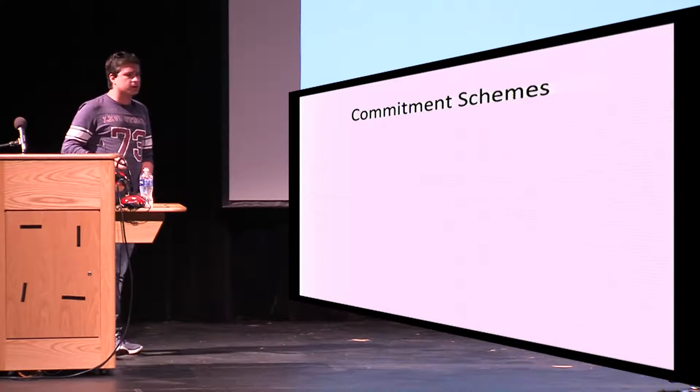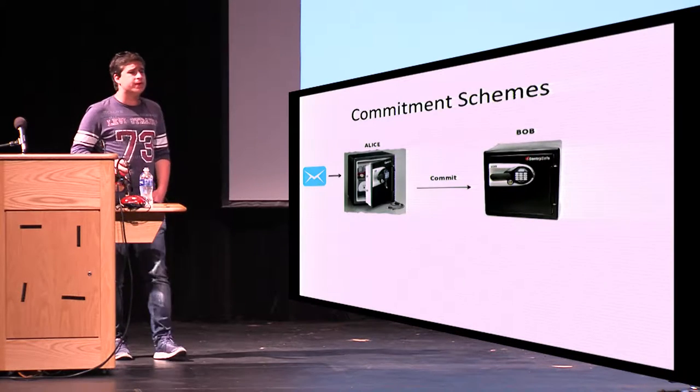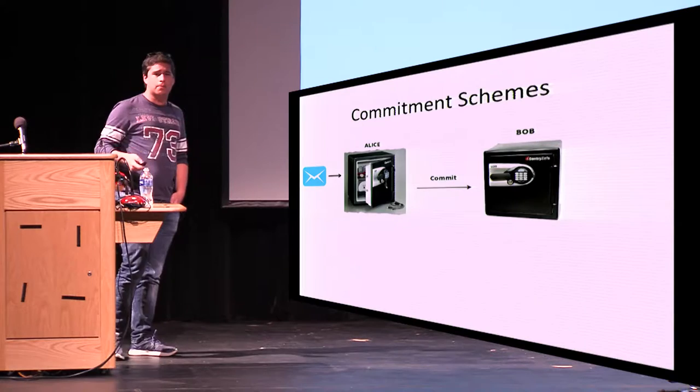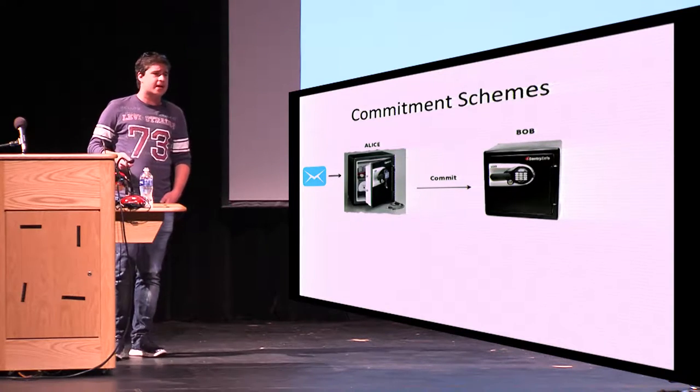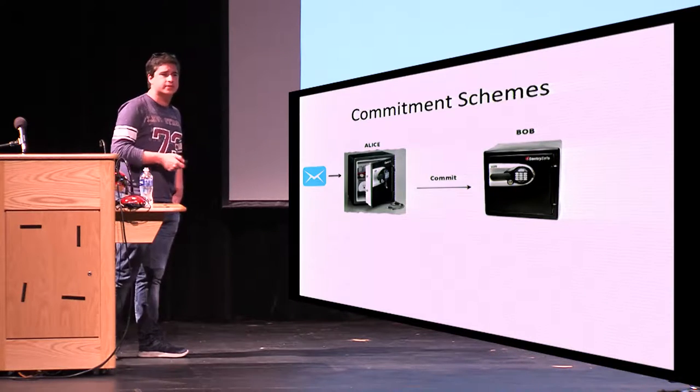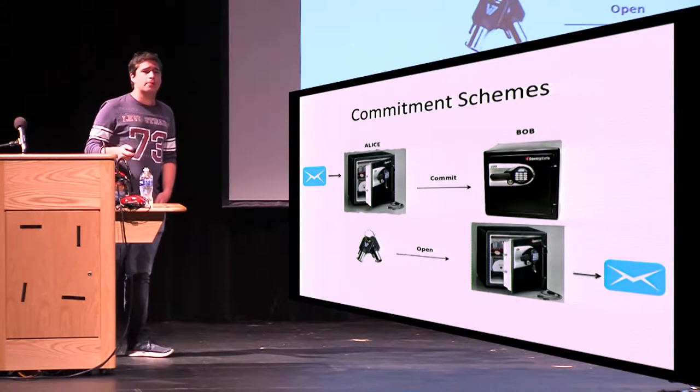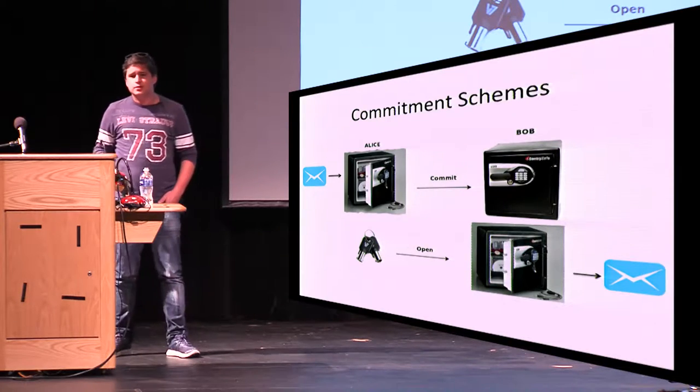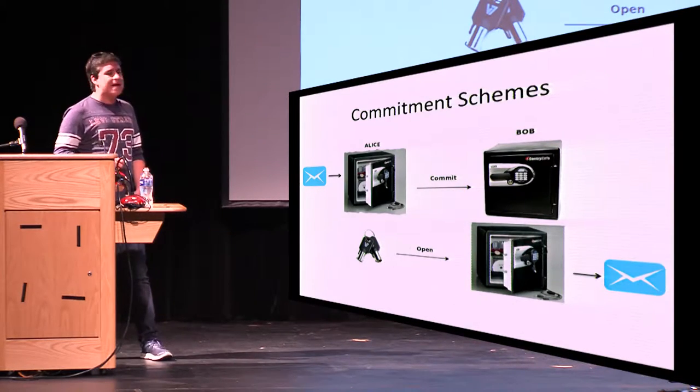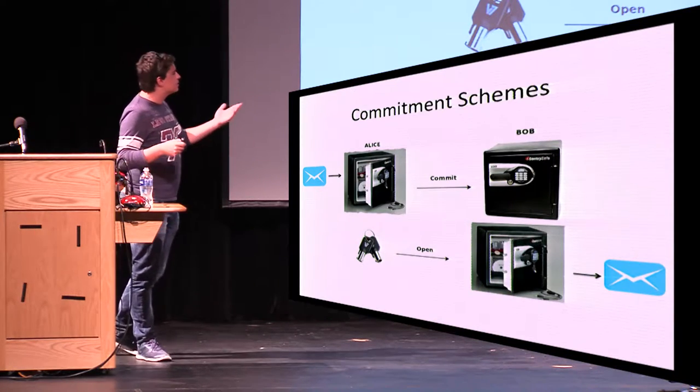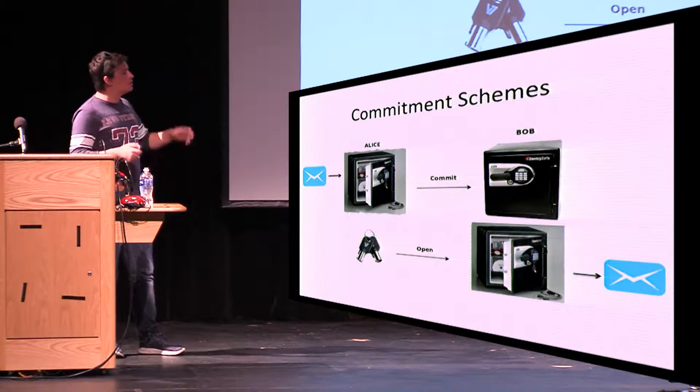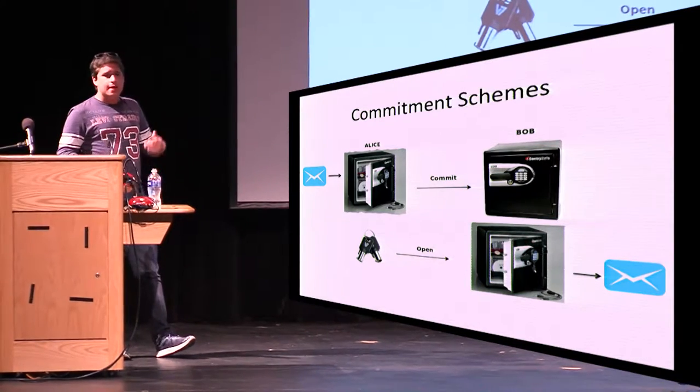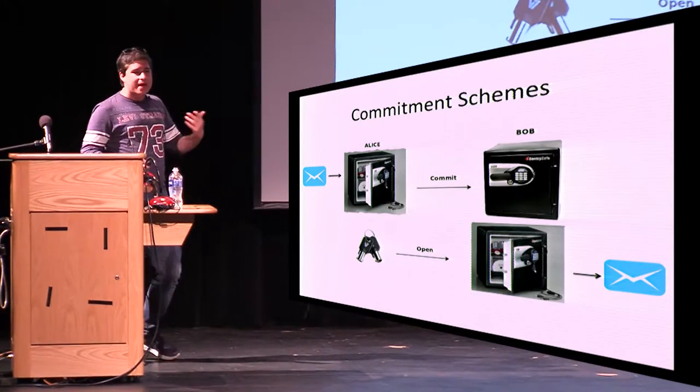So, first of all, what are commitment schemes? You can think of it as a box where you can put a message, lock the box, send the box to the other side, from Alice to Bob. Now Bob has the box with the message inside, but Bob doesn't know what the message inside the box is. Later on, Alice can just send Bob the keys, which open the box, which allow Bob to get the message out of the box. Now Bob is also guaranteed that Alice didn't change the message from the time when she actually sent the box and the time when she sent the key.